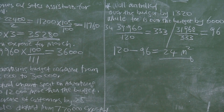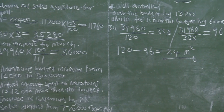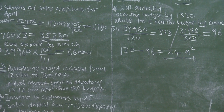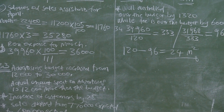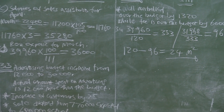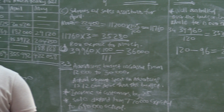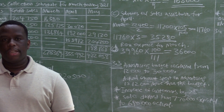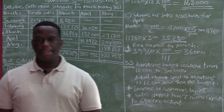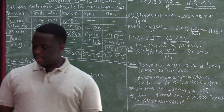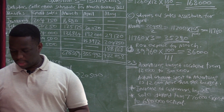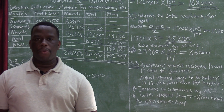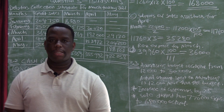That was question 3.4, which was the last question under question 3 — budgeting. Let us pause here and take a break before coming back to question 4 on stock valuation.